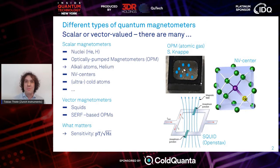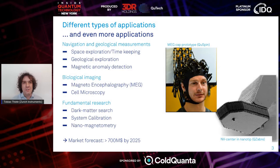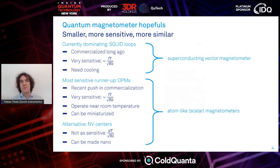Just as a comparison, the Earth's magnetic field is on the order of 50 microtesla. This sensitivity really sparks a lot of different applications on every scale. These applications range from navigational and geological surveys to biological imaging, and all the way to dark matter searches or magnetometry on nanostructures. The market for quantum magnetometers is still growing rapidly, and forecasts indicate it will be much more than 700 million within the next few years. We'll focus on the particularly promising ones — optically pumped magnetometers and NV centers, or nitrogen vacancy centers.